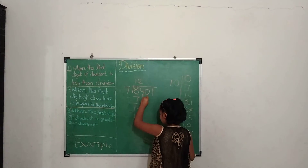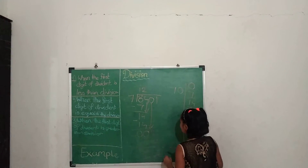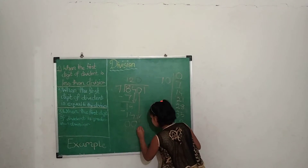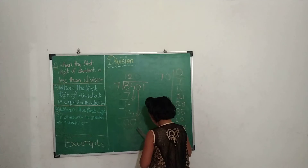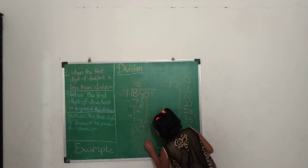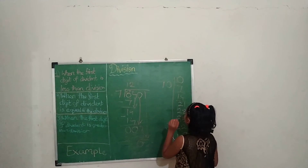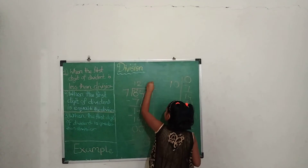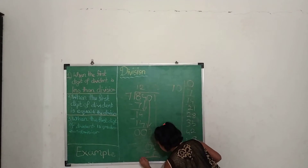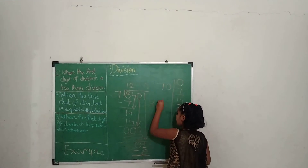Now we bring the next digit down and write 0 in the quotient. We take 7 zeros are 0, write 0 here and subtract. Then we bring down 1, write 0 in the quotient, subtract 0, leaving remainder 1. The number is finished, so our remainder is 1.